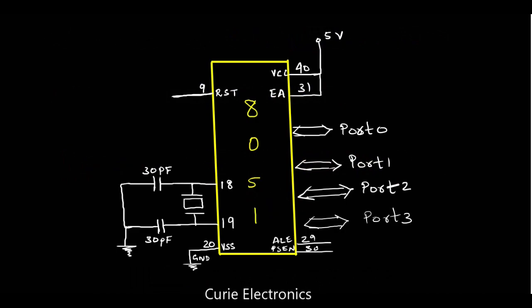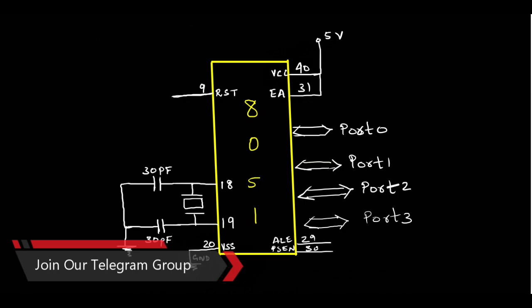This is the 8051 microcontroller. If you see, we have mainly four ports. First, what you have to do is give the power supply. For the 8051 microcontroller, working voltage is 5 volts. So Vcc is connected to 5 volts and Vss, that is the ground, is connected to ground. Now we have applied the supply to the microcontroller.